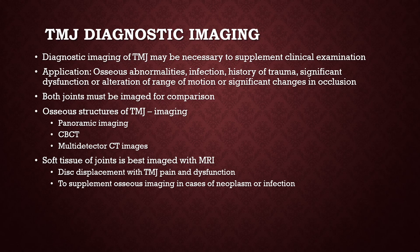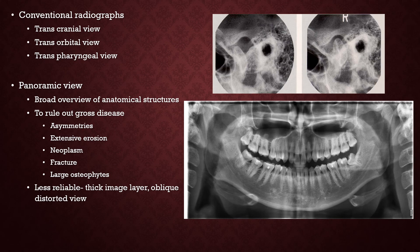The application of diagnostic imaging in TMJ disorders is primarily to look at osseous abnormalities, infections, history of trauma, significant dysfunction or alteration of range of motion, or significant changes in occlusion. Minor TMJ dysfunctions or alterations in range of motion do not really warrant diagnostic imaging, and both joints must be imaged for comparison. For osseous structures of the TMJ, preferred imaging modalities are panoramic imaging or higher resolution images like CBCT or multi-detector CT. For soft tissue of the joints, MRI is best.